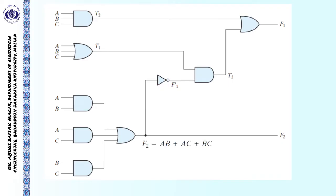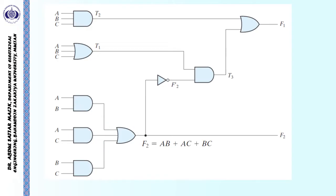Next, we will write down the boolean expressions for these different marked output gates. In case of F2, we can easily see that F2 is the output of this OR gate whose inputs are coming from three AND gates. The output of this AND gate is AB, the output of this AND gate is AC, and the output of this AND gate is BC. The logic sum of these three outputs will be the output F2. Thus, F2 is equal to AB plus AC plus BC.